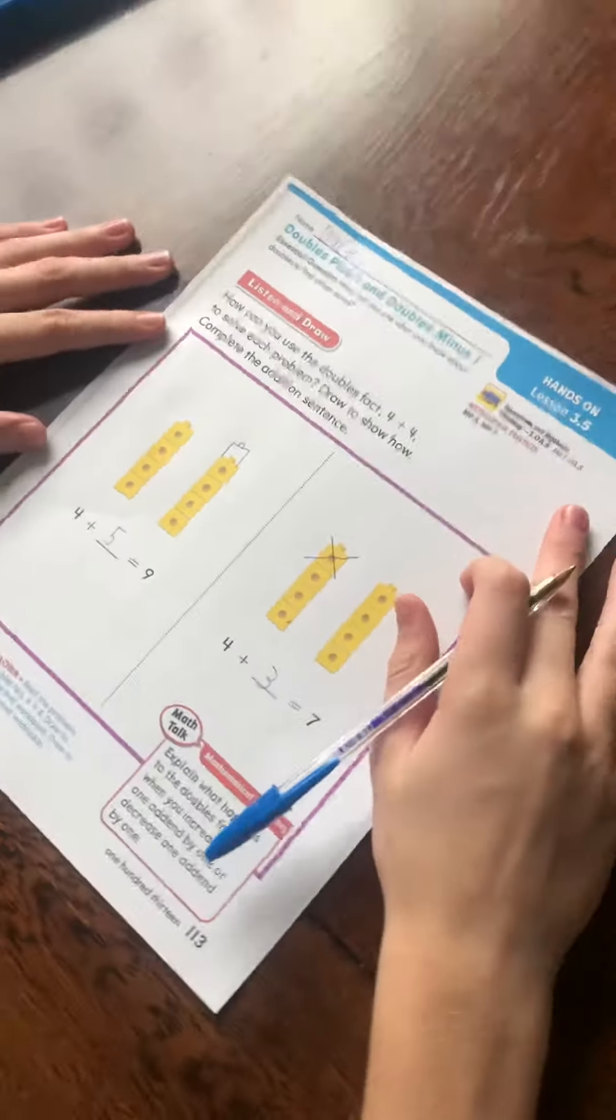Well, so if we know our doubles facts, and then we can do doubles plus 1 and doubles minus 1, we can actually figure out a lot of different problems if we know our doubles facts. Is that correct, Blake? Yep. You're amazing. Oh, you're amazing. Thanks, bud. You're welcome.